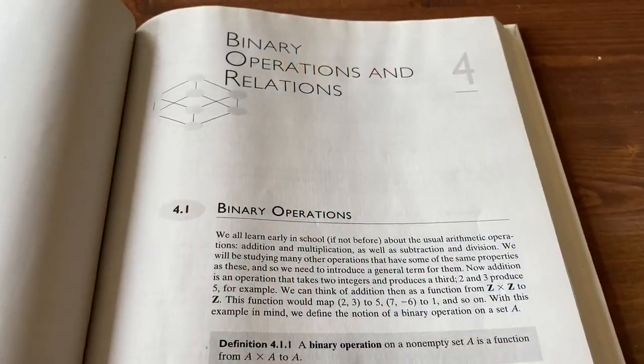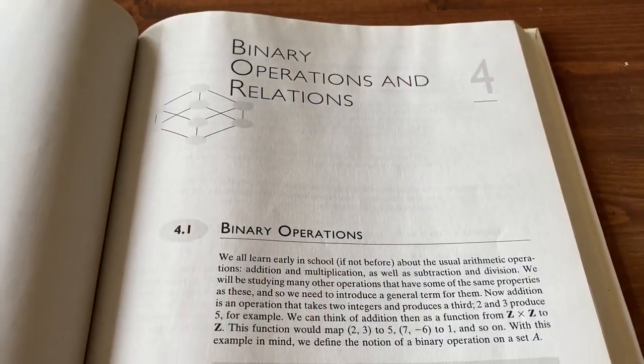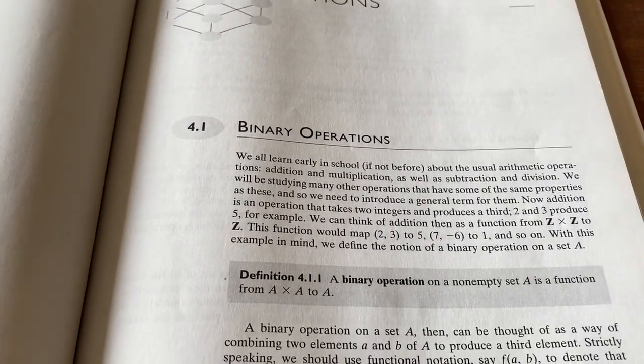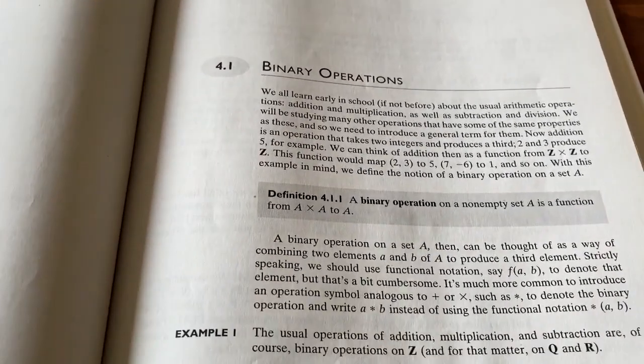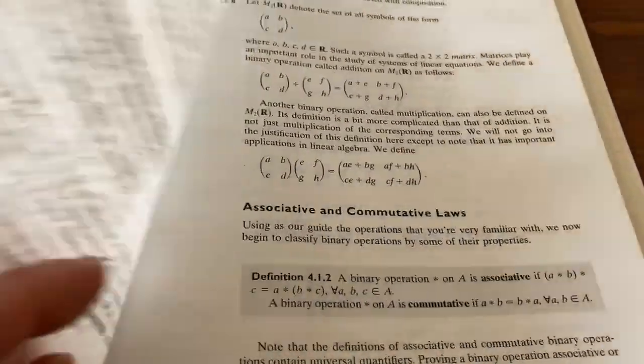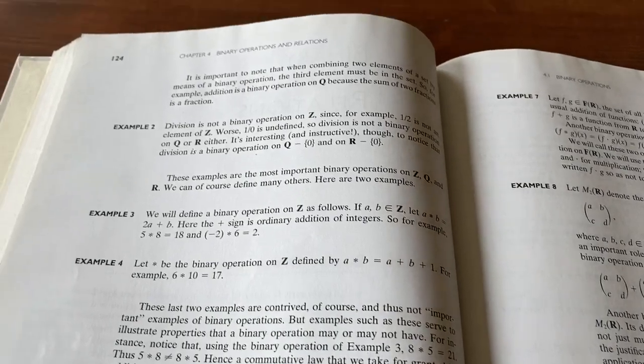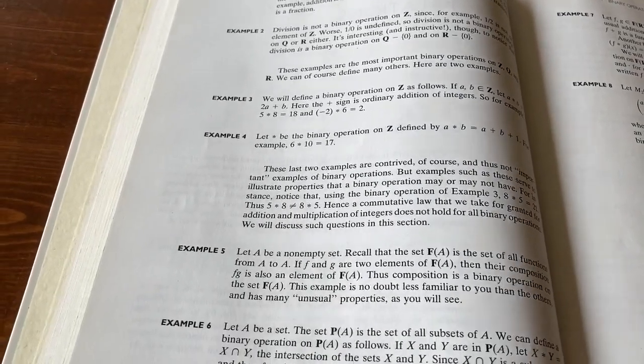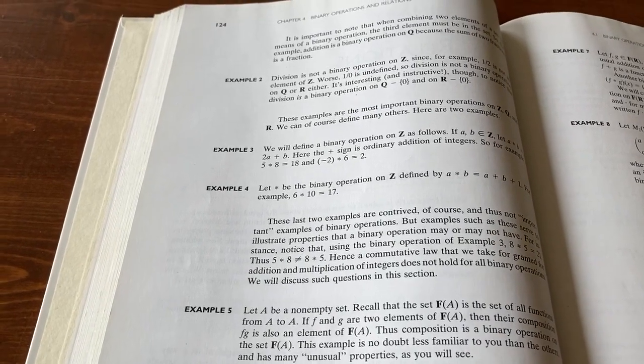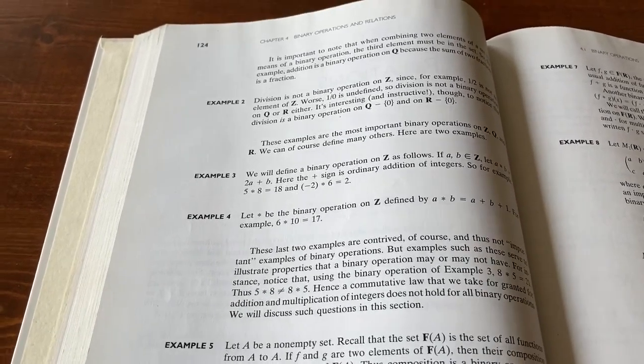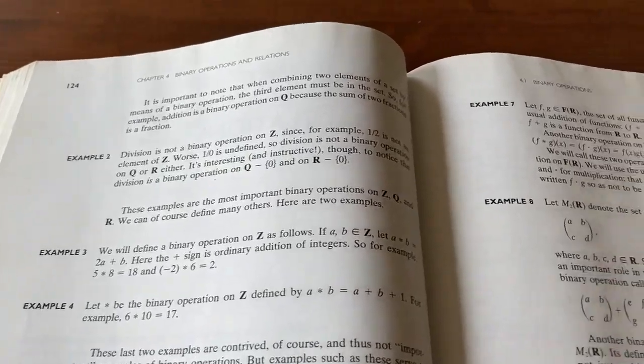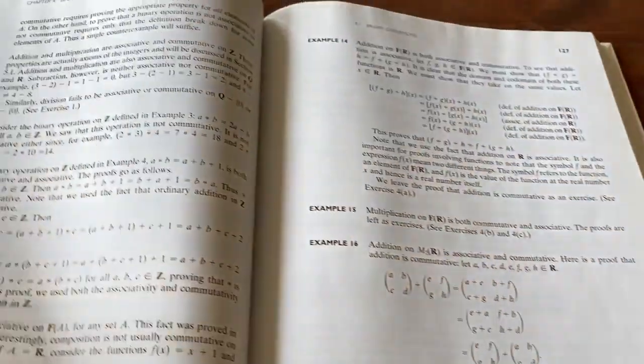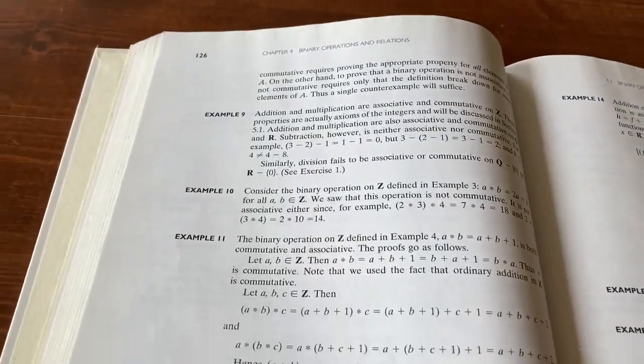This is the section on binary operations and relations. This stuff is super important. So if you ever take abstract algebra, you typically start by briefly studying binary operations. Well, here, it's more than a brief study. You get tons of exposure, tons of examples, tons of problems. I think you have a deeper treatment of binary operations in this book than you would in pretty much most abstract algebra books. I mean, look at all of these examples. Really nice. Just a great treatment.